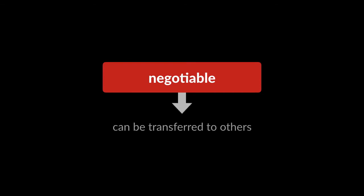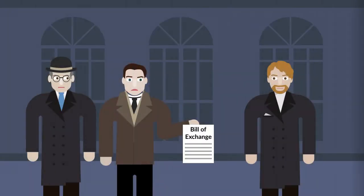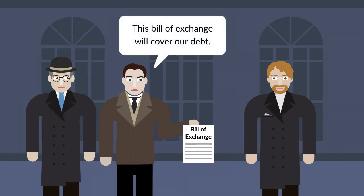And like a promissory note, it's negotiable, meaning it can be transferred to others. Norton and Keith gave the bill of exchange to John Swift, a Maine resident, to pay off a previous debt they owed him.